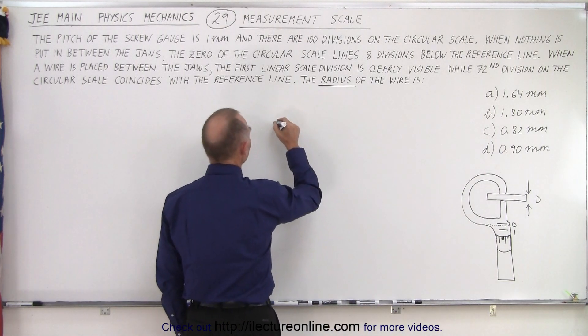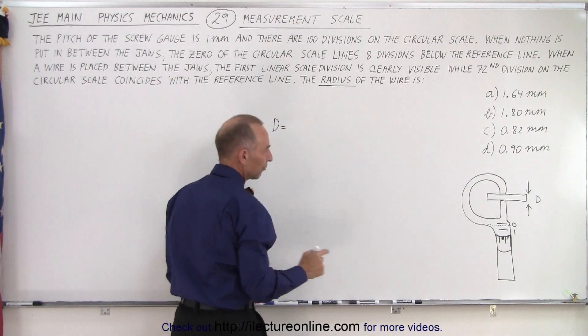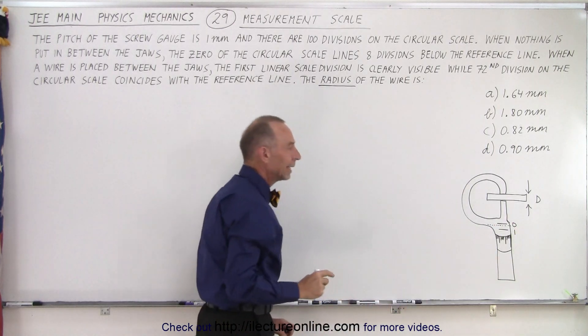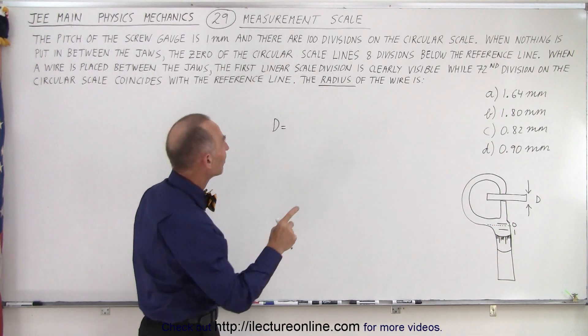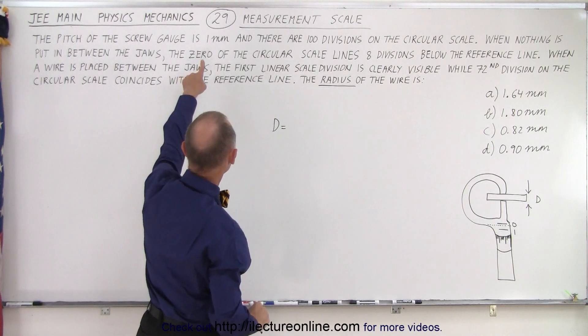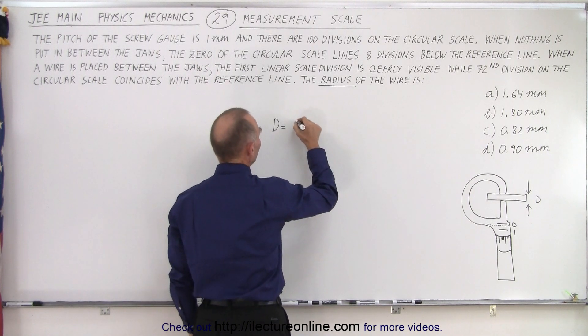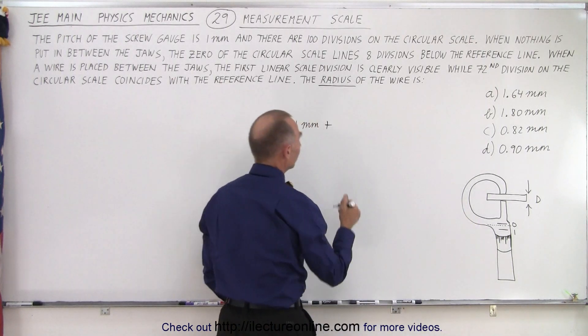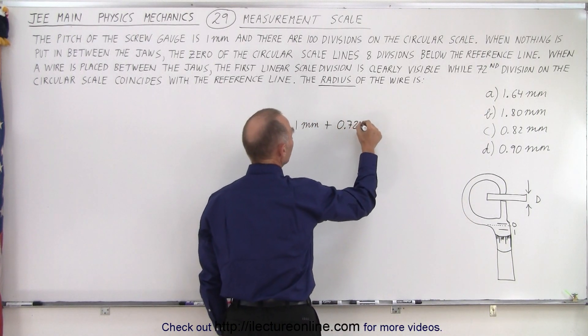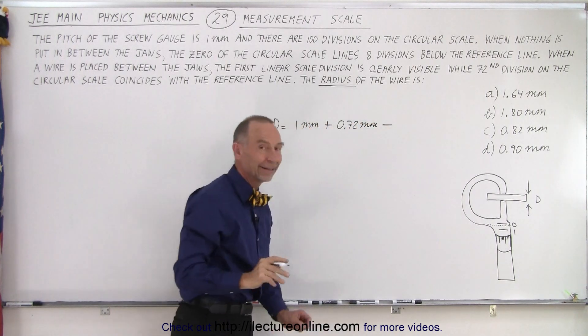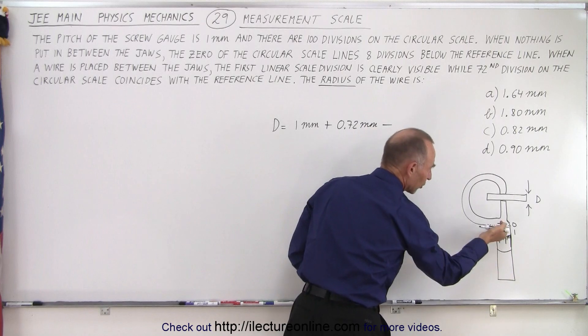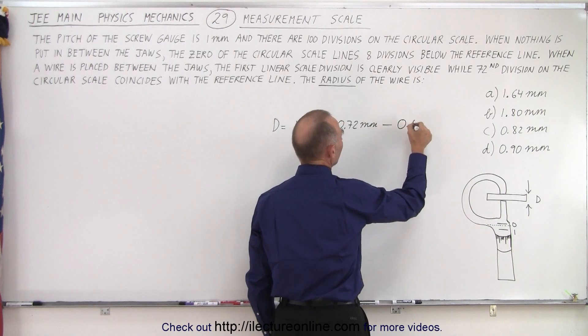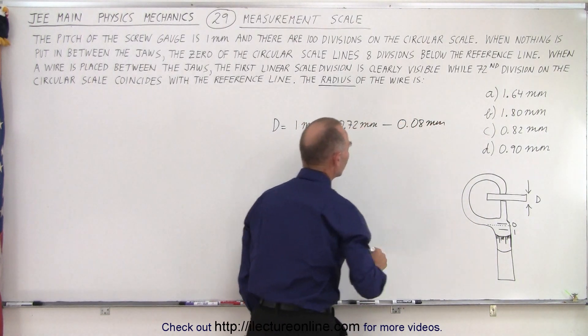So eventually what we can then say is that the diameter is equal to: well first of all, they tell us that the first scale here of the vertical scale is clearly visible. That means that's equal to a hundred divisions on the circular scale or that's equal to one millimeter. So the diameter of this is going to be one millimeter plus another seventy two divisions on the circular scale which is zero point seven two millimeters. But then we have to subtract the error in the zero reading when we close it all up. This is eight circular divisions, so that means we have to subtract point zero eight millimeters from the total reading.